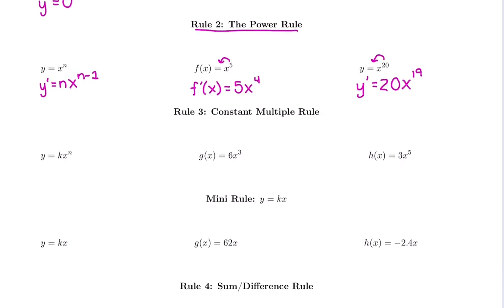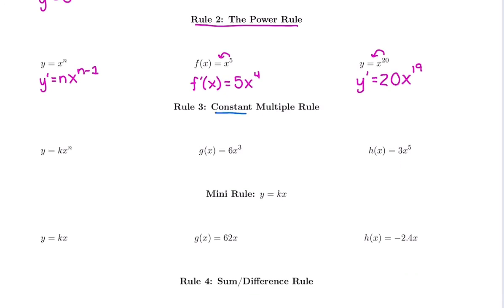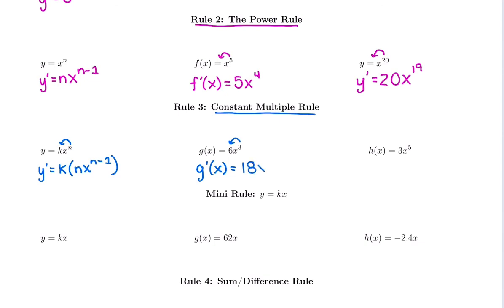The next rule is the constant multiple rule — what if it's not just x to a power, but it has a constant multiple in front of it? This is what I'd call a do-nothing rule: keep the constant k, still bring down the power, and subtract one for the new power. For g of x, the derivative g prime has us bring down the 3: 6 times 3 is 18, and x to the 3 minus 1 is x squared. So g prime of x is 18x squared.